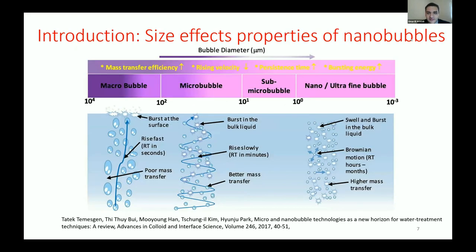Regarding the size effect properties of nanobubbles: a normal bubble will rise fast, has poor mass transfer, and bursts at the surface. The microbubble is smaller — it will burst in the liquid, not only at the surface, rises slowly, and has better mass transfer. The ultrafine nanobubble will swell and burst in the liquid, move in Brownian motion, stay up to hours and months in the liquid, and has higher mass transfer.